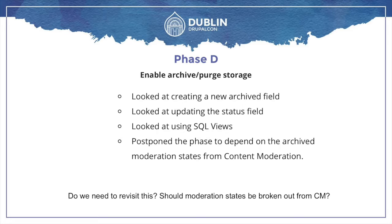Phase D was enabling archive and purge storage. I spent weeks looking at how we can archive entities — mark things as deleted but not actually delete them. In contrib we added an archive field to all entity types. In core that didn't seem like the best approach, so we looked at changing the status field, but that blew up a whole load of things like views that assume a boolean status field.